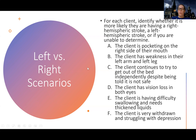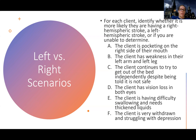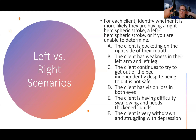Scenario B: the client has weakness in their left arm and left leg. If there's hemiplegia or weakness on the left side of the body, the brain problem is on the opposite side. If the right side of the brain has a problem, the left side is weak. If the left side of the brain has a problem, the right side is weak. Left arm and left leg weakness means it's a right brain issue. So that's a right hemispheric stroke.